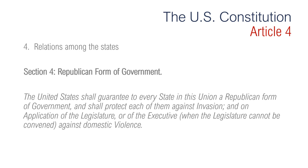Article 4, Section 4 is regarding republican form of government. Each state is promised a republican form of government — that is, one in which the people elect their representatives. The federal government is bound to protect states against any attack by foreigners or during times of trouble within a state.